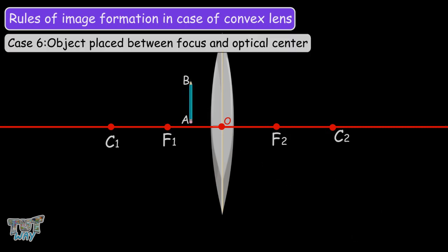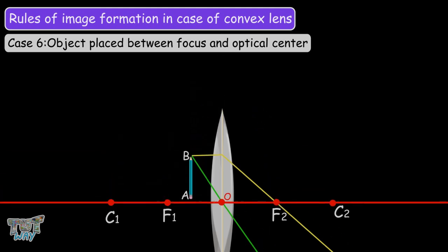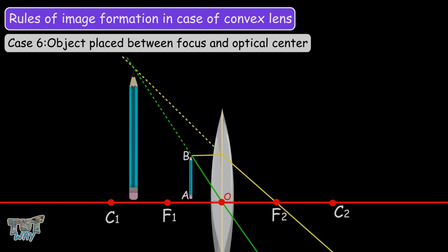The sixth case is when the object lies between F1 and the optical center. The ray parallel to the principal axis refracts and passes through F2. The ray through the optical center emerges without deviation. These rays do not actually meet at any point, but they appear to meet at a point if produced backwards. So the image is formed on the same side as object AB. It is enlarged, virtual, and erect.